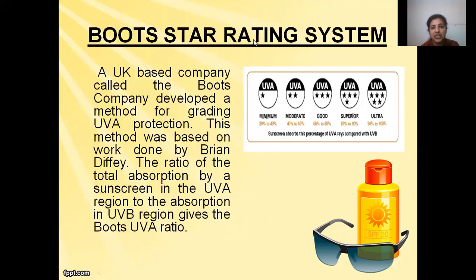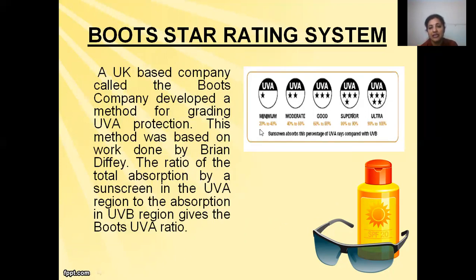Another factor is the Boots star rating system, which is generally depicted on sunscreen bottles. A UK-based company called the Boots Company developed a method for grading UVA protection, based on the work done by scientist Brian Diffey. The ratio of the total absorption by a sunscreen in the UVA region to the absorption in the UVB region gives the Boots UVA ratio. If the ratio is 20 to 40% it is one star; 40 to 60% is two stars; 60 to 80% is three stars; four stars is superior; and five stars — excellent, meaning 90 to 100% protection.